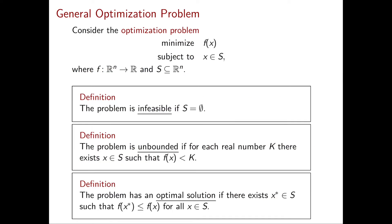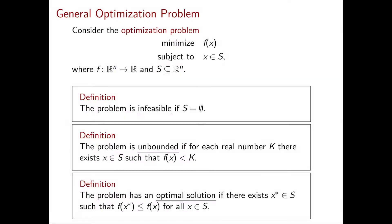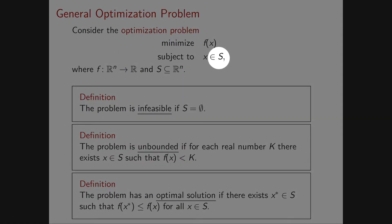I want to start this chapter by explaining why linear programming is such a special optimization problem. Throughout this course we will see several fundamental properties of linear programming, and I want you to know that general optimization problems don't always have these properties. To see this, let's look at a general optimization problem: minimize a function f(x) where x is constrained to be in a set S.